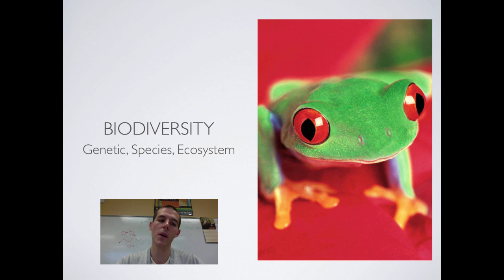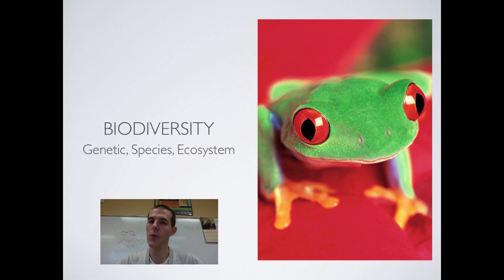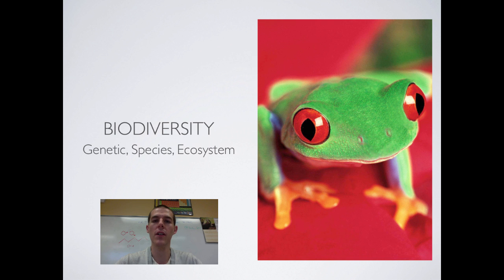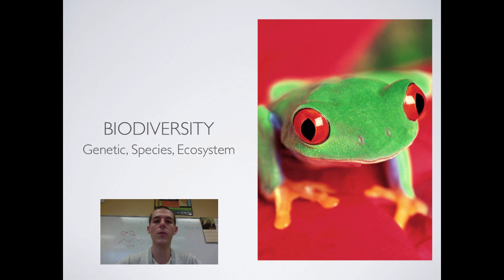The second type is species biodiversity — within an ecosystem, the variety of animals that are present. Places like a rainforest have high species biodiversity, while places like a desert have fairly low species biodiversity. Usually the more biodiversity present in an area at the species level, the healthier that ecosystem is. A healthy ecosystem is going to be able to provide more food, and more food provides greater opportunity for species to live in the area.